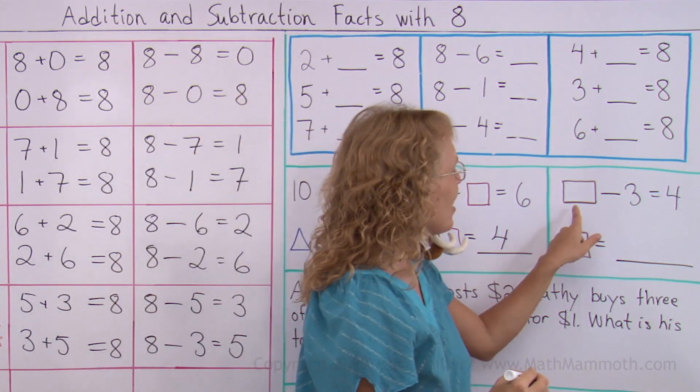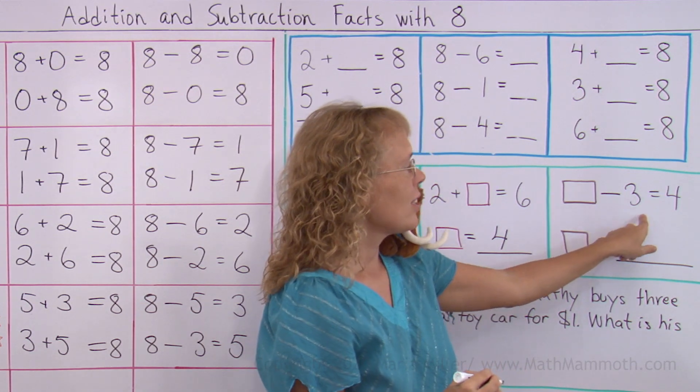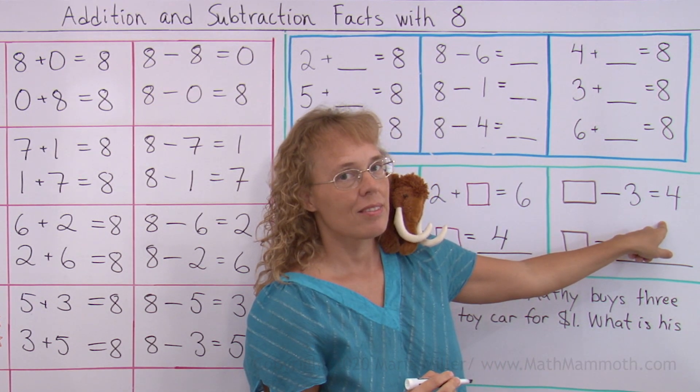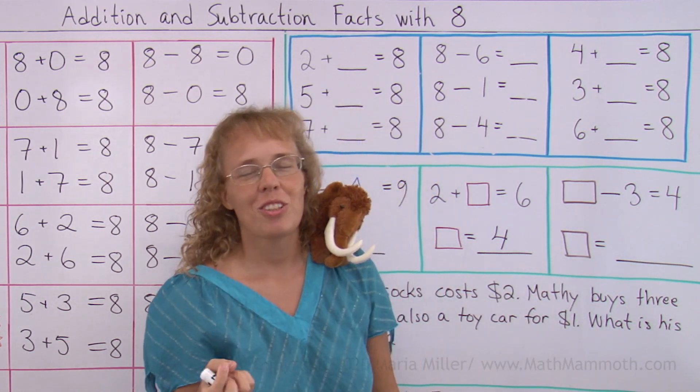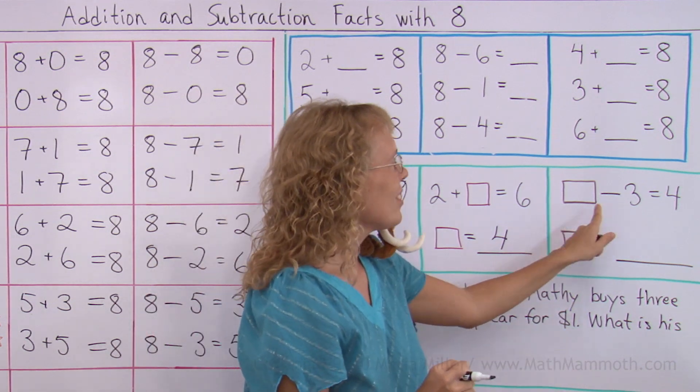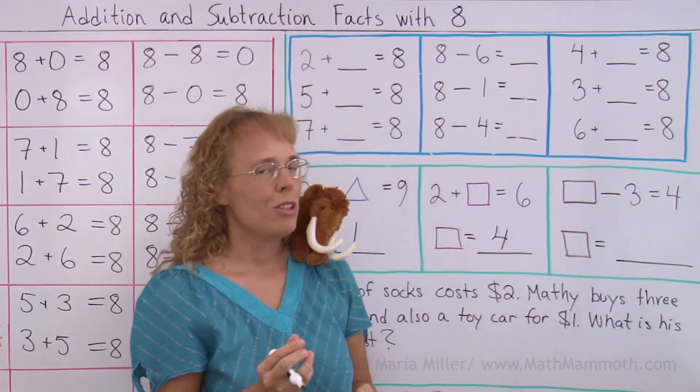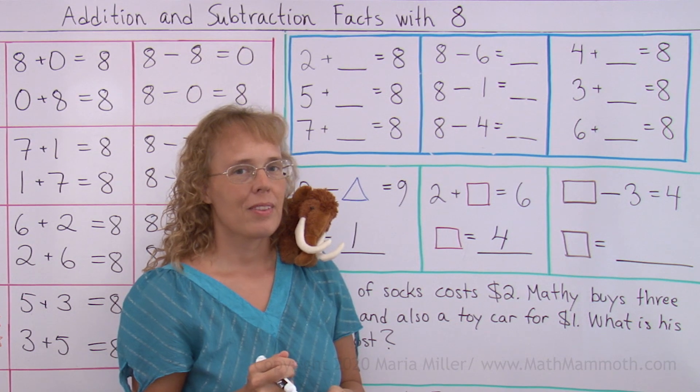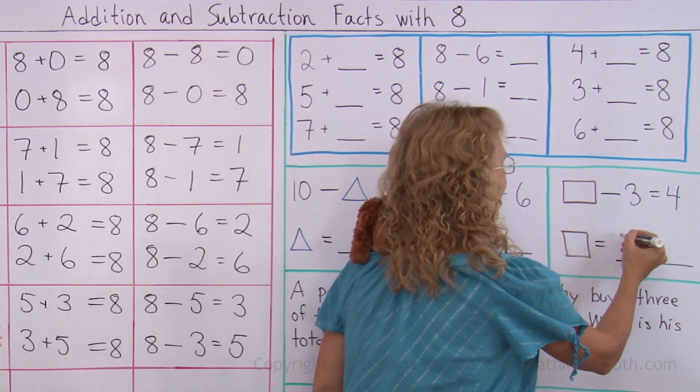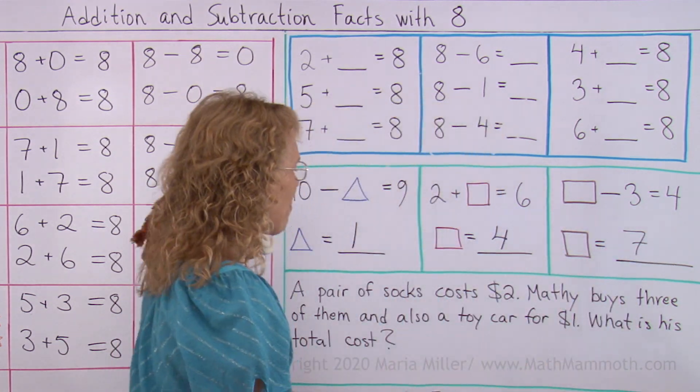And then this number minus 3 equals 4. The answer is not 1. 1 take away 3 would not equal 4. 7. Yes, this square has to equal 7.